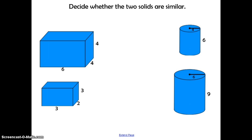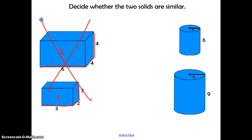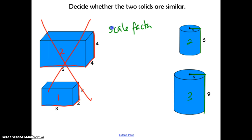Here we want to decide whether the two solids are similar by comparing side lengths. When you compare 6 to 3, that's a ratio of 1 to 2. We want to see if all other side lengths match that. 4 to 2 has a ratio of 2 to 1, and 3 to 4 does not follow the ratio of 1 to 2, so these two solids are not similar. For the two cylinders, the radius of 4 to 6 simplifies to a scale factor of 2 to 3, and the heights of 6 to 9 also simplify to 2 to 3, so the scale factor is 2 to 3.